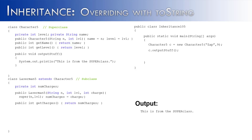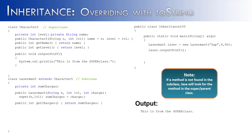Now, what would happen if we create an object of the subclass, or the LaserMan5 class? We construct an object of LaserMan5 called laser and call the method outputStuff. The problem is LaserMan5 does not have an outputStuff method. If a method is not found in a subclass, Java will look for that method in the super or parent class. It finds it inside of Character5, and so if we were to run this code, it would say 'This is from the super class.'